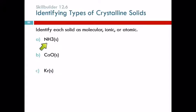So if we look at NH3, N is a non-metal and H is a non-metal. What kind of compound is that? That's a molecular compound, right? In order to be an ionic compound, it would have to have a metal in it. So it's a molecular compound. So what are the particles? They're molecules. So this is a molecular solid.